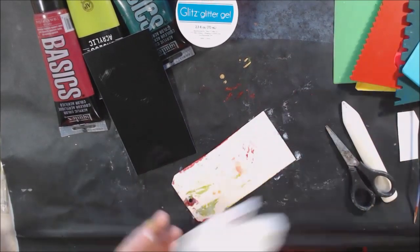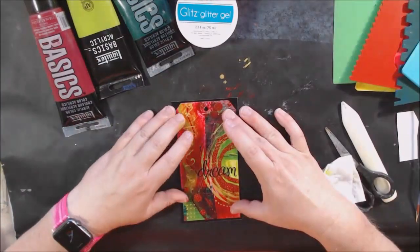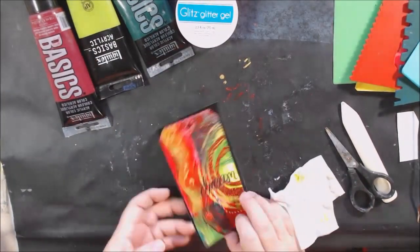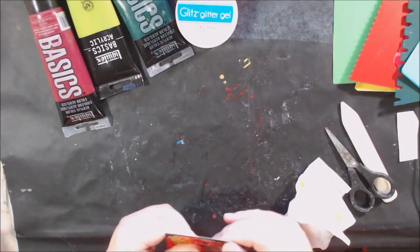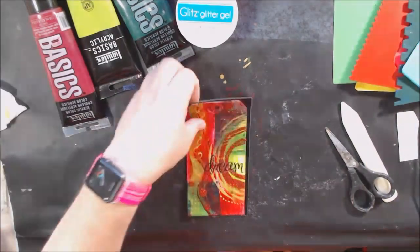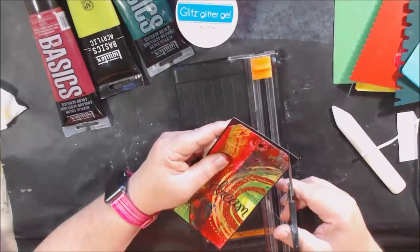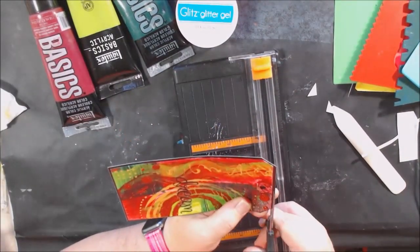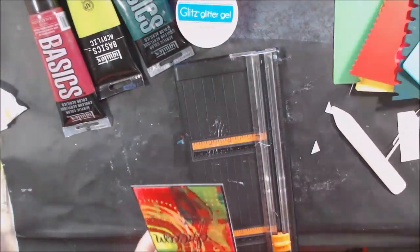I decided this one needed a back. I used some black glossy cardstock scrap that I had to make a little frame all the way around the outside of the tag. It also has the benefit of covering up the mess on the back.